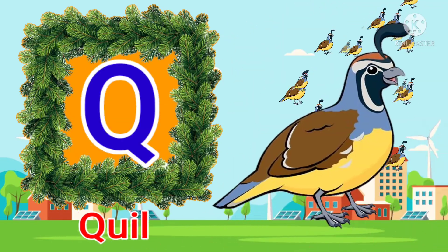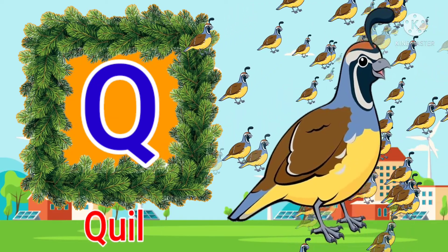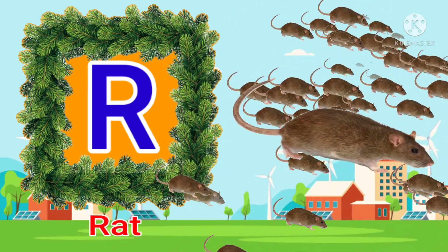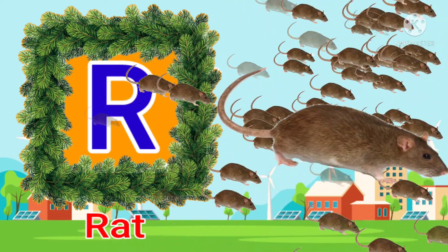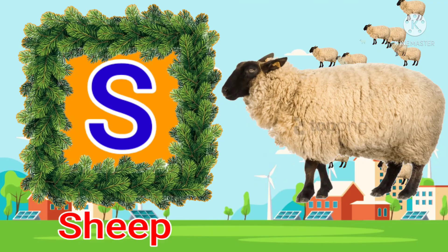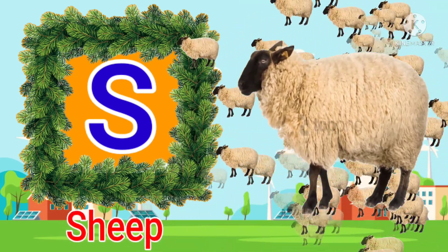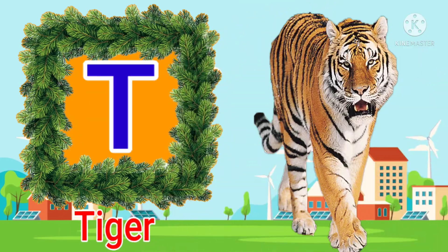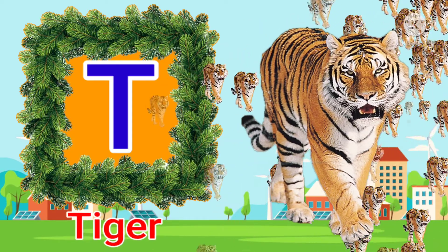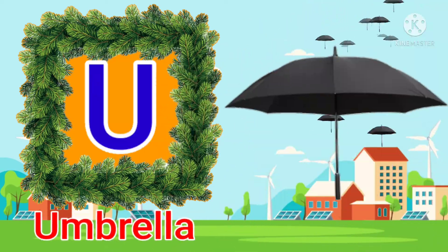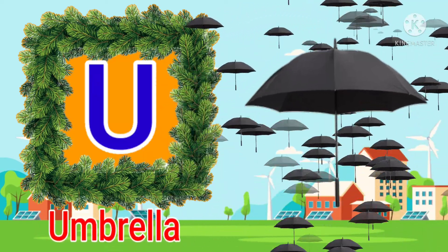Q for coal, R for red, S for sheep, T for tiger.